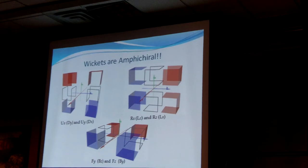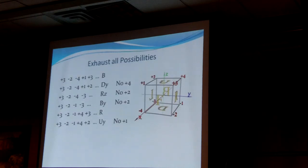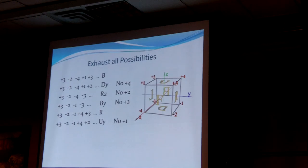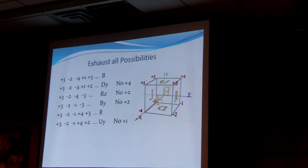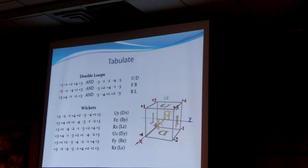That's important for understanding Lockyer's model because he's claiming one of his structures is amphichiral, but actually three of them are. By exhausting all the possibilities — always turning left, then turning right — I would always get what I call B for the path that goes around the base, another that goes around the front, and what I call DY for the down face with the Y bias — a wicket with the Y bias.